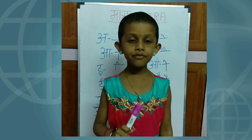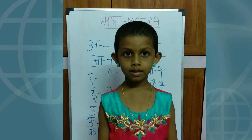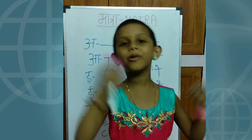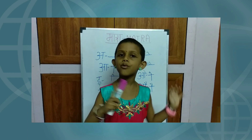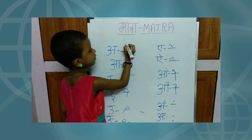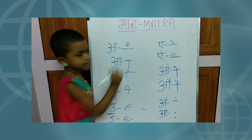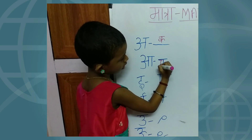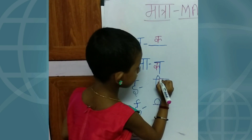If any letter joins a matra, the matra gives the vowel sound to that letter. Now we can see one example: Ka — Ki.